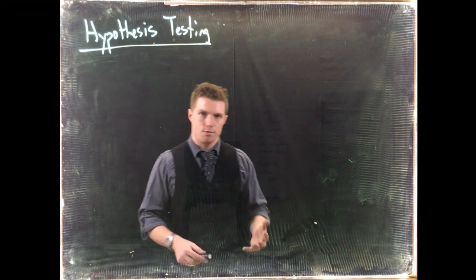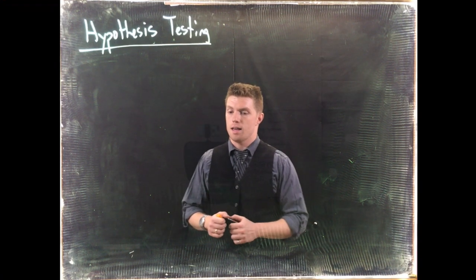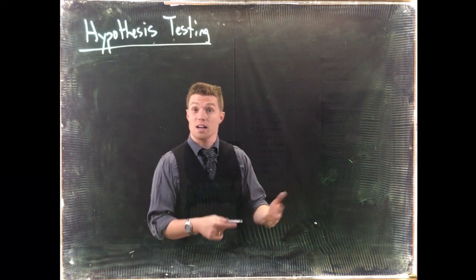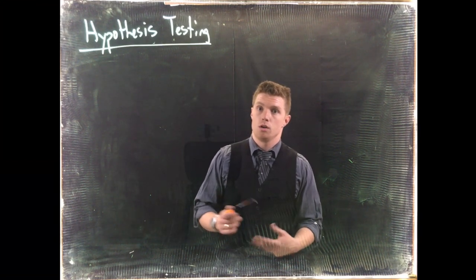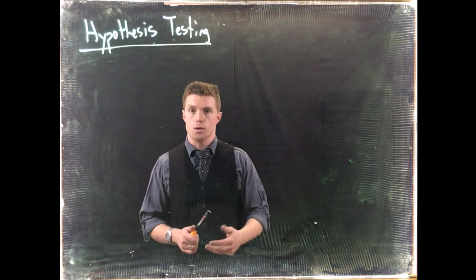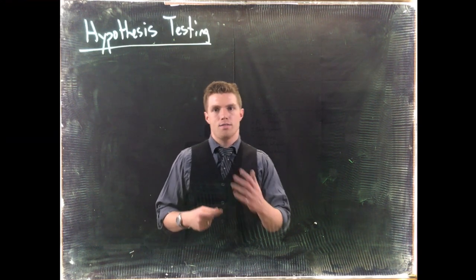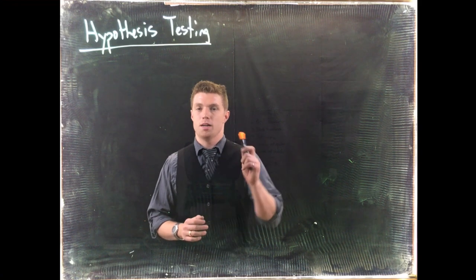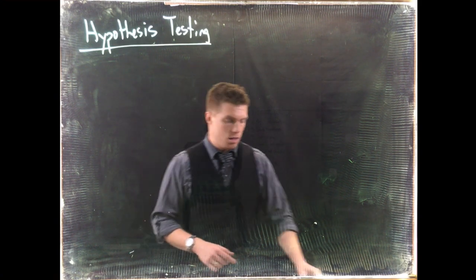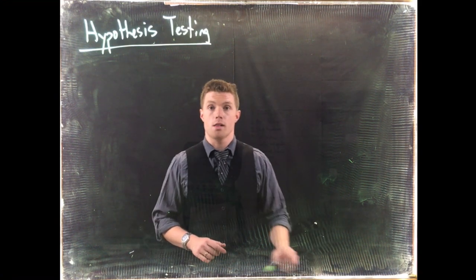Now that we've done hypothesis testing I've got to make a confession — I have lied just a little bit on our error. So far I've really talked about how alpha is our error: the probability that we're going to reject the null hypothesis when the null hypothesis is actually true. I've kind of couched that as the only type of error, but it's not. We need to expand into another type of possible error that we can have.